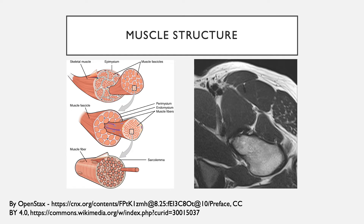What is muscle structure? There is skeletal muscle, which is surrounded by the epimysium, and then it has multiple muscle fascicles within it. Each muscle fascicle is surrounded by the perimysium. It has muscle fibers within, and then there is the endomysium. Within the muscle fiber, there is the sarcolemma. This microstructure is not typically seen on MRI images.